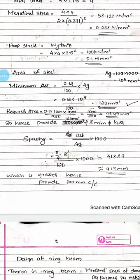The required area is calculated as 0.1 into 100 into 1000 divided by sigma ST. Sigma ST from IS456 page 82 is 230 N/mm². Therefore the required AST equals 0.1 × 100 × 1000 divided by 230, giving a required area of 43.47 mm².